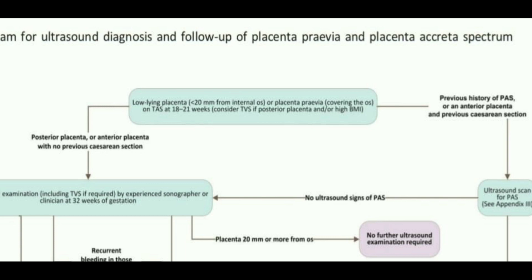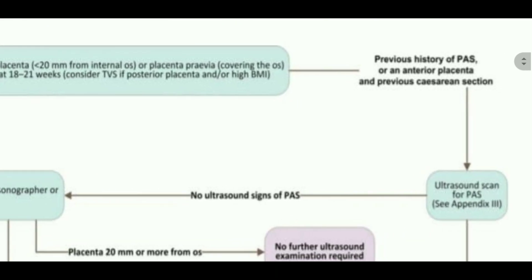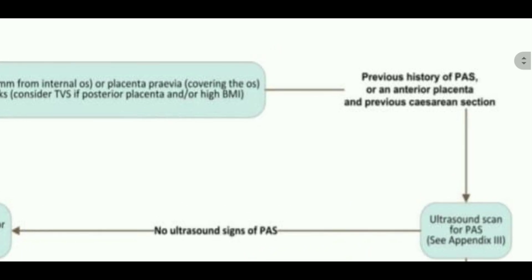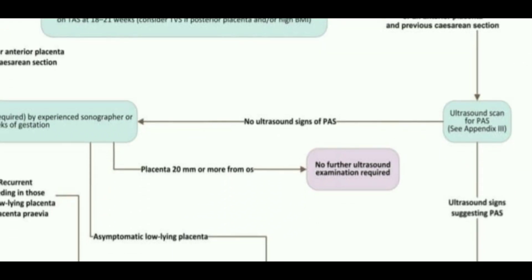Once we find either low-lying placenta or placenta previa, we can go in two directions: right or left. The right side approach is for patients who had a previous C-section. On the right side, the risk factors listed are: previous history of placenta accreta spectrum, anterior placenta, or previous cesarean section. If these features are present, we proceed to perform an ultrasound scan for placenta accreta spectrum.